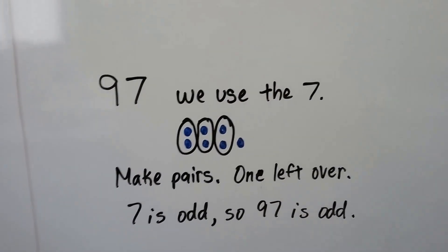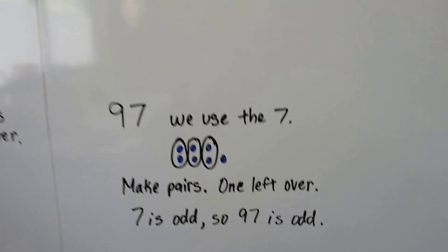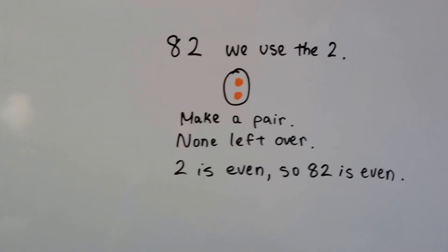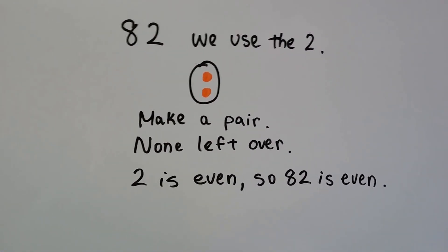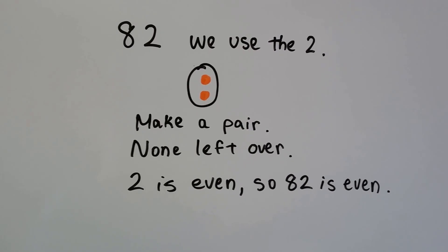82, we use the 2. We make a pair, there's none left over, so the 2 is even. That means 82 is even.